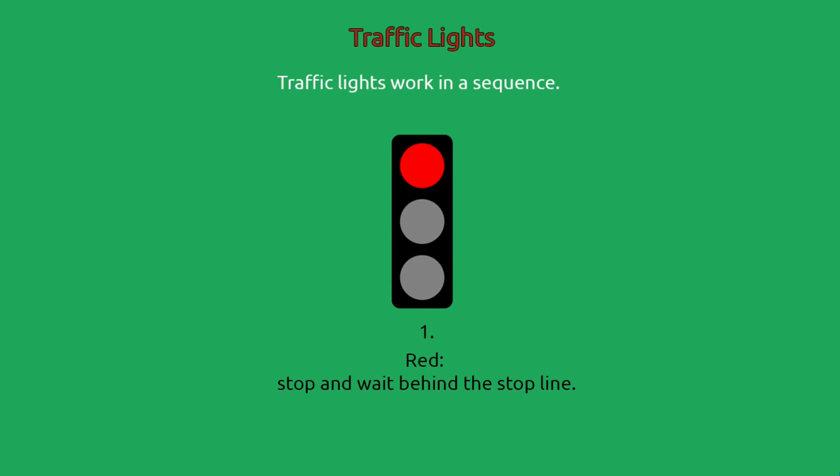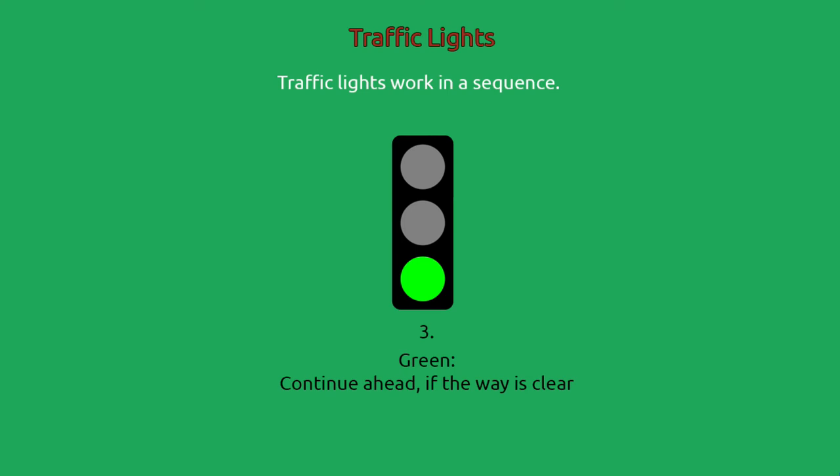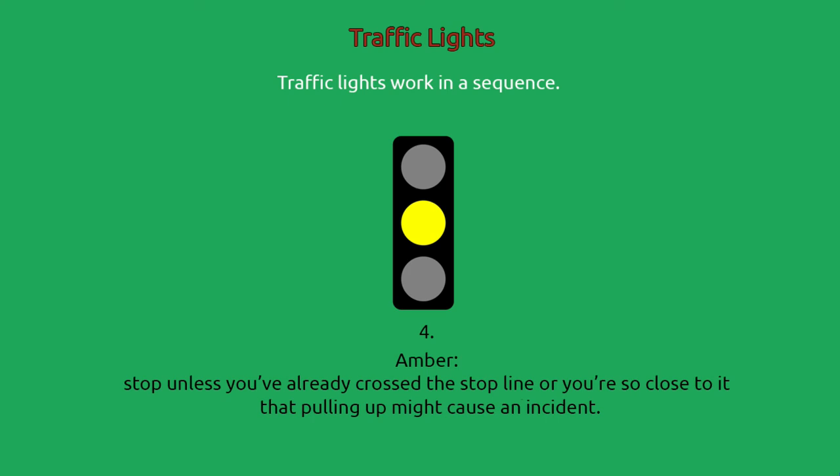Traffic lights work in a sequence: 1. Red — stop and wait behind the stop line. 2. Red and amber — stop and wait; don't pass or start until the green light shows. 3. Green — continue ahead if the way is clear. 4. Amber — stop unless you've already crossed the stop line or you're so close to it that pulling up might cause an incident.